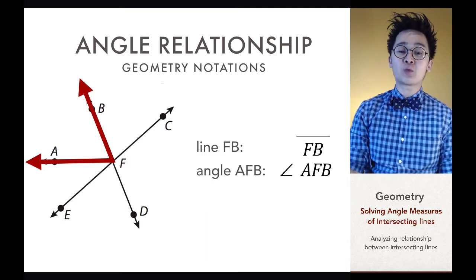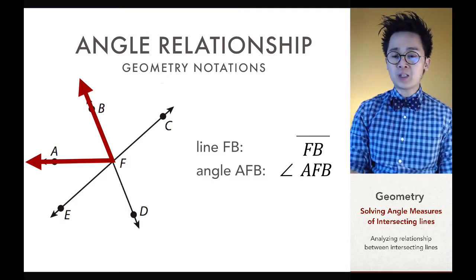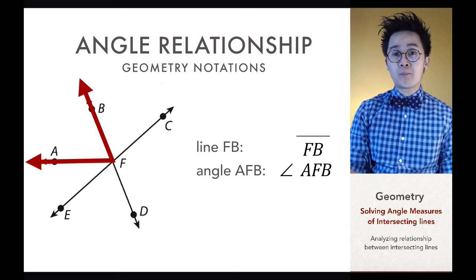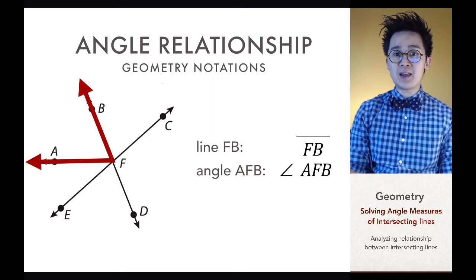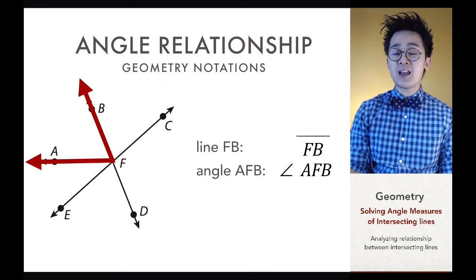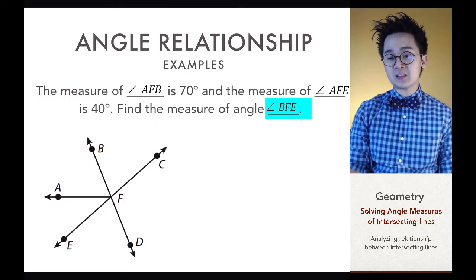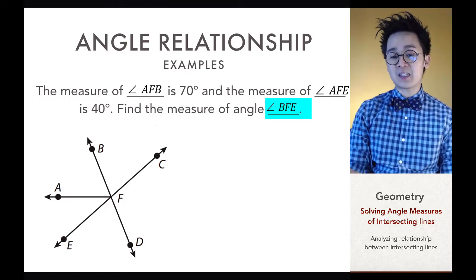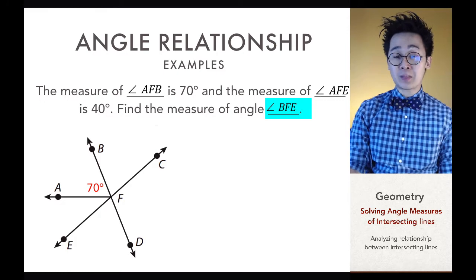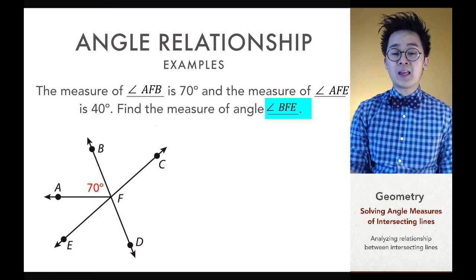These are the two notations we'll be using today. You need to be familiar with these symbols because sometimes geometry problems are not written descriptively — they use symbols in the questions. For example, if the measurement of angle AFB is 70 degrees and the measurement of angle AFE is 40 degrees, not knowing how to read these symbols would make answering the problem challenging. But since we know angle AFB equals 70 degrees and angle AFE equals 40 degrees, we can proceed.